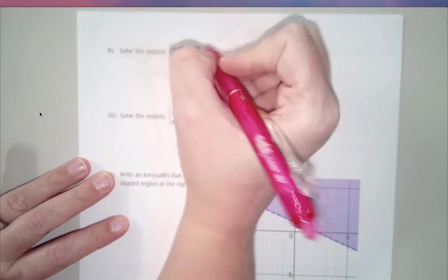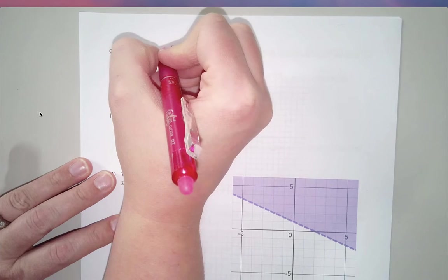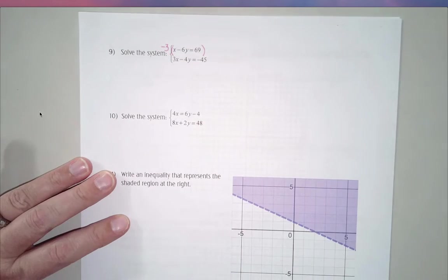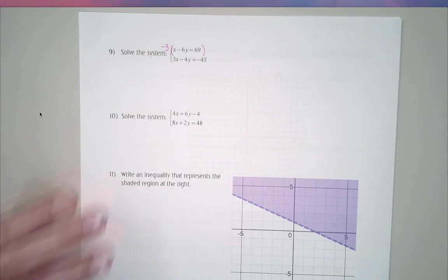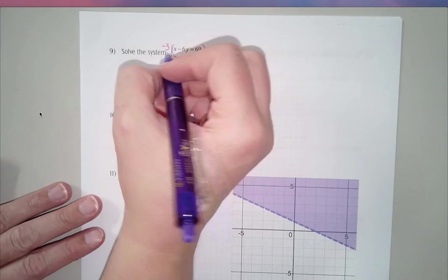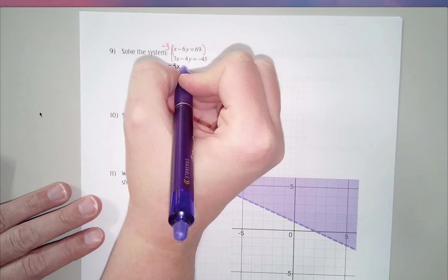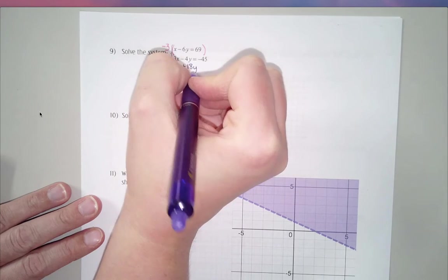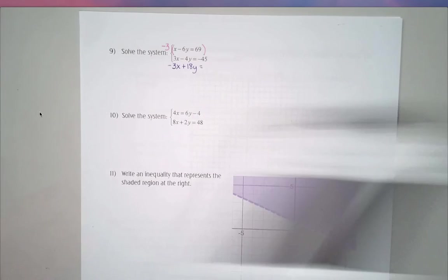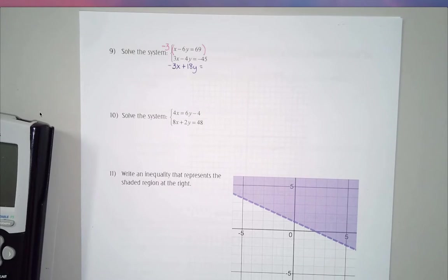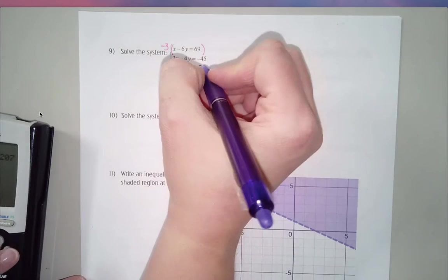So I'm going to take this top equation and multiply by negative 3. And I'm going to distribute that and rewrite the equation down below. So that's going to give me negative 3x plus 18y equals negative 3 times 69. I think it's going to be negative 207.